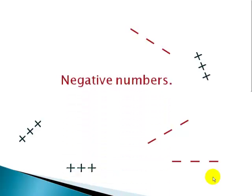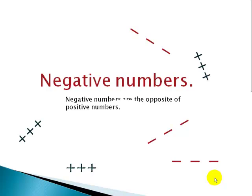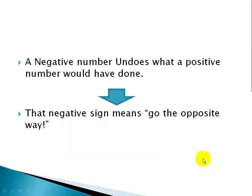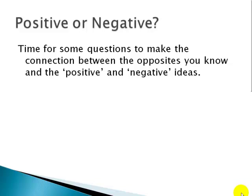Negative numbers are the opposite of positive numbers. Positive numbers keep getting bigger, negatives keep getting lower. A negative number undoes what a positive number would have done. That negative sign means go the opposite way. So, positive or negative, let's review some questions to make the connections between opposites you know and the positive and negative ideas.